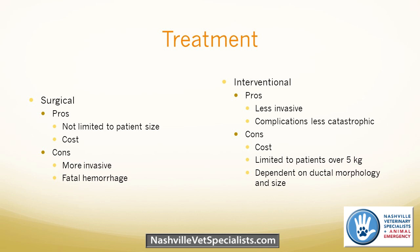The main con of interventional closure is cost — it tends to be more expensive, around $4,000–6,000 at my residency at UT, partly because the device we use is pricey. Another limitation is patient size — patients typically need to be over five kilograms, depending on femoral artery size. In patients less than 5 kg, their femoral arteries are not large enough to allow the catheters to pass through. Very small dogs like tiny Pomeranians may never reach 5 kg and must go to surgery. The last limiting factor is ductal morphology.